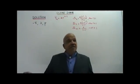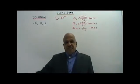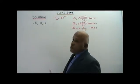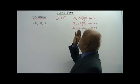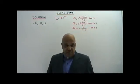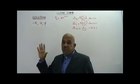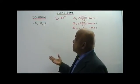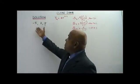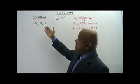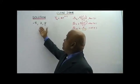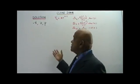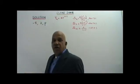Hi. Here I have for you another clone question based on the year 2008 — Geometric Progression. You are given three consecutive terms: negative 8, 2, P, of a geometric progression. Find the value of P.